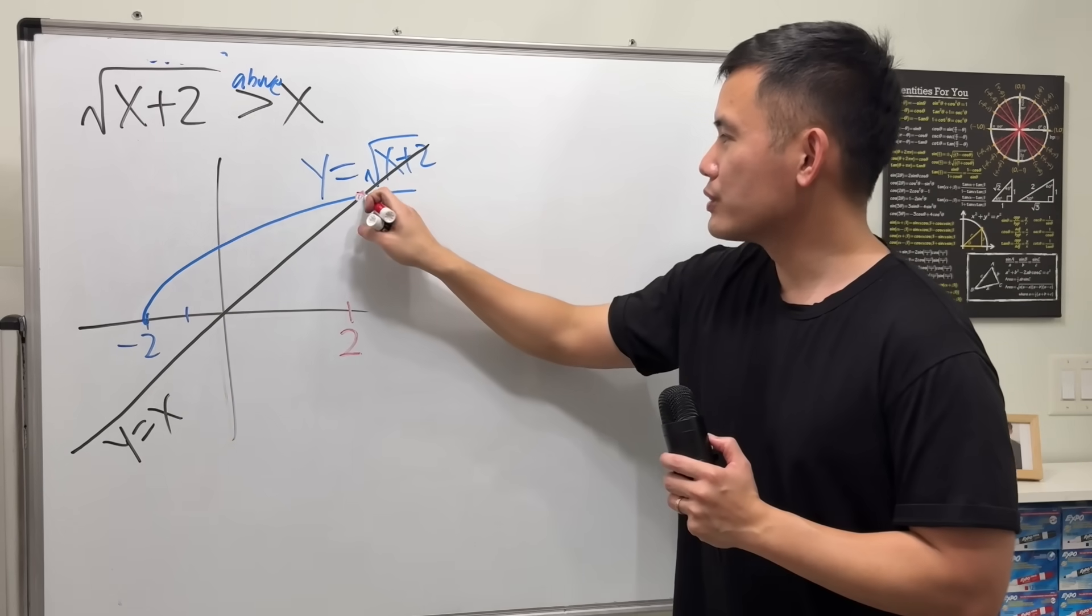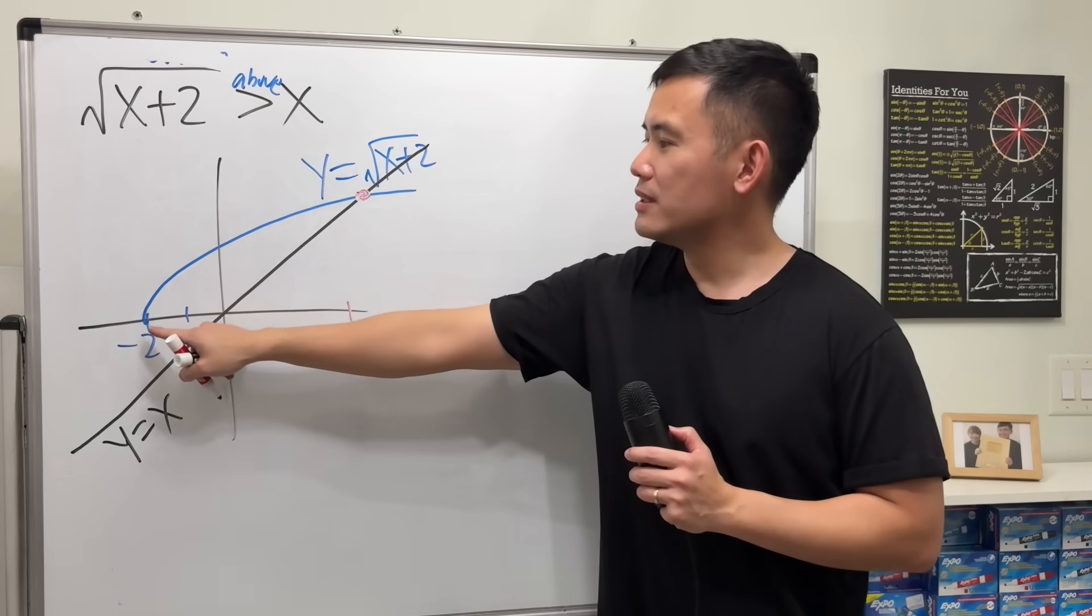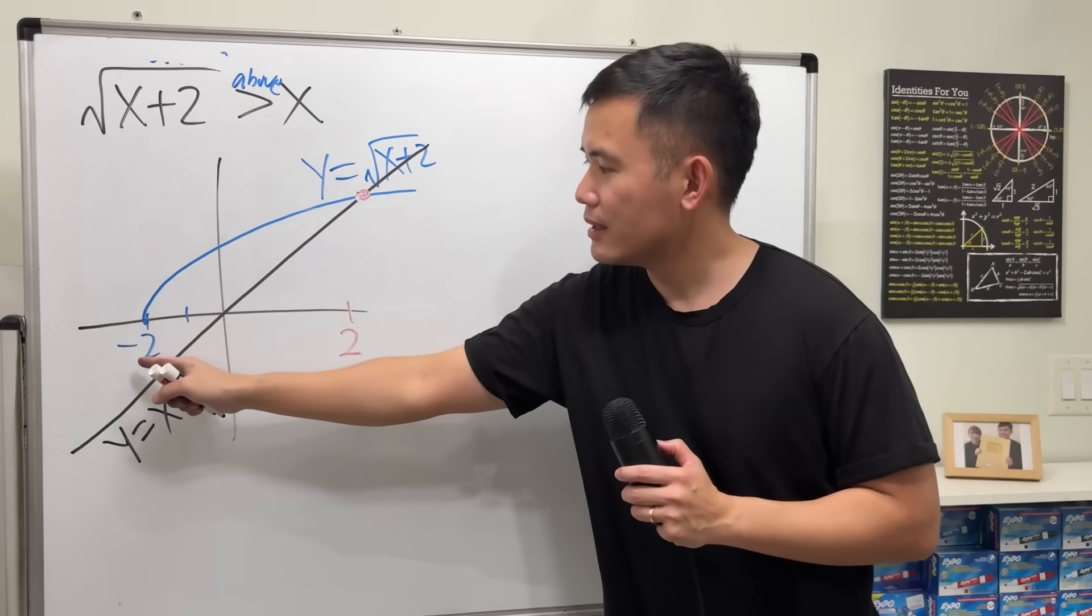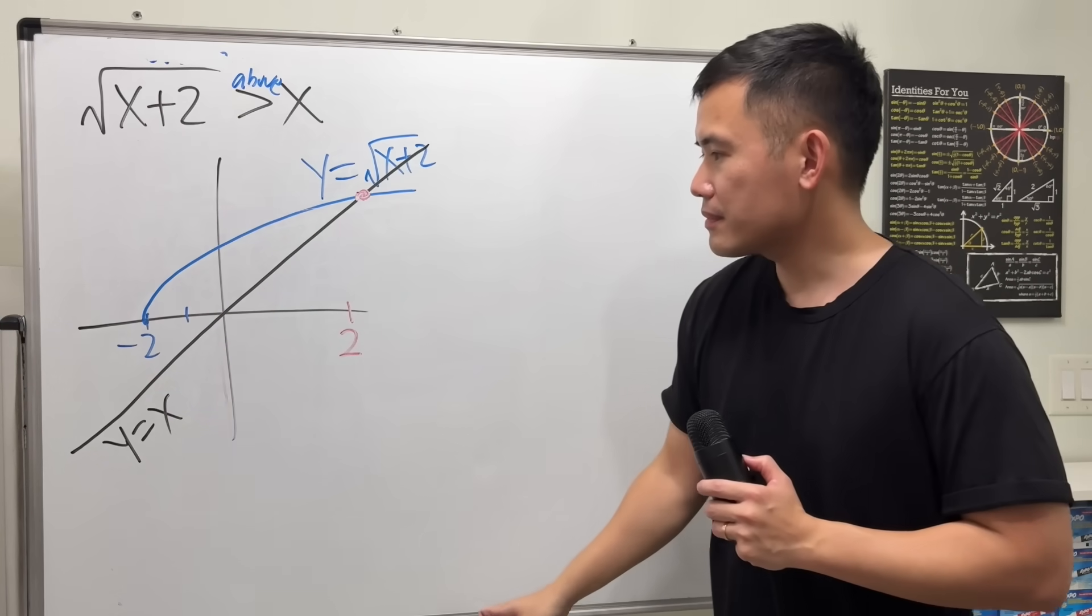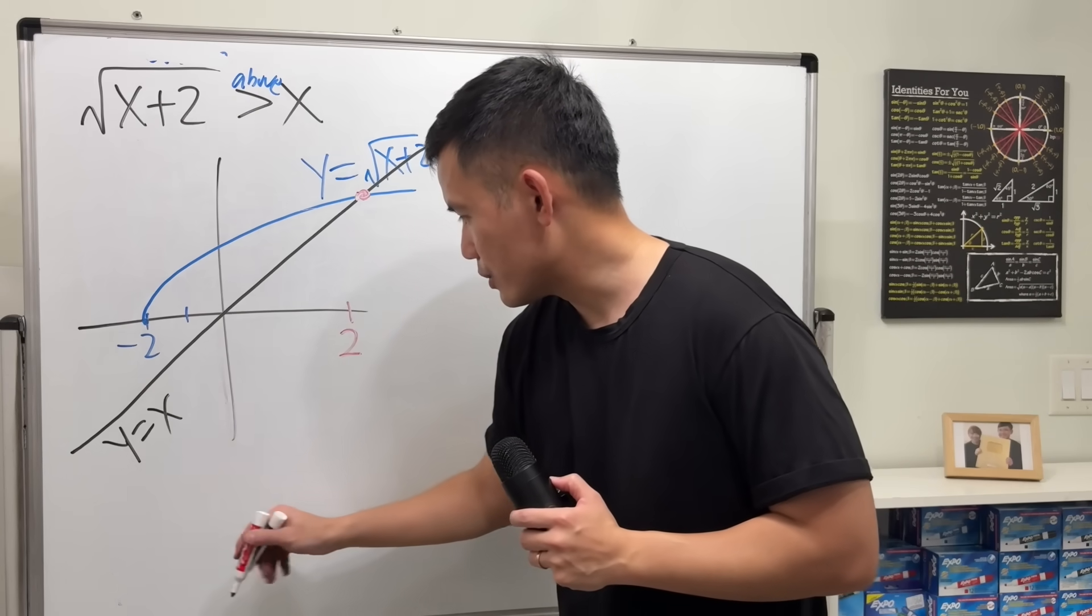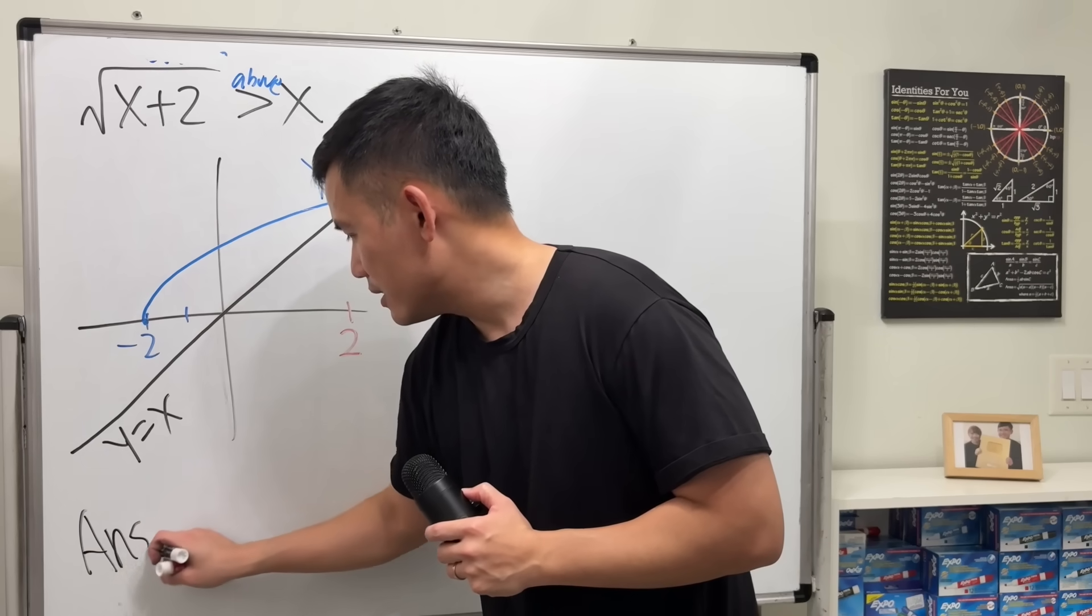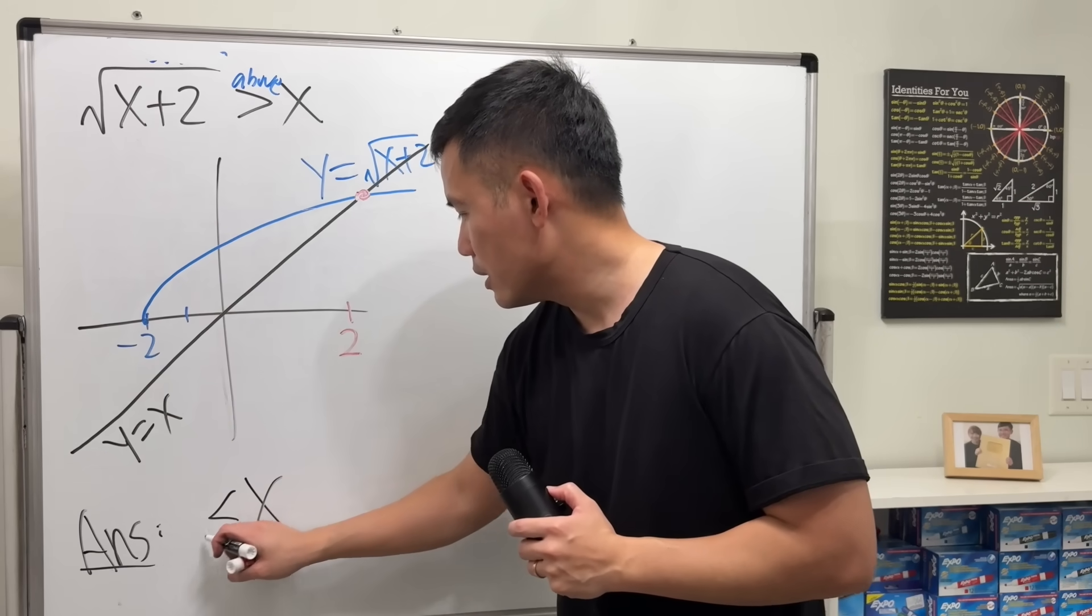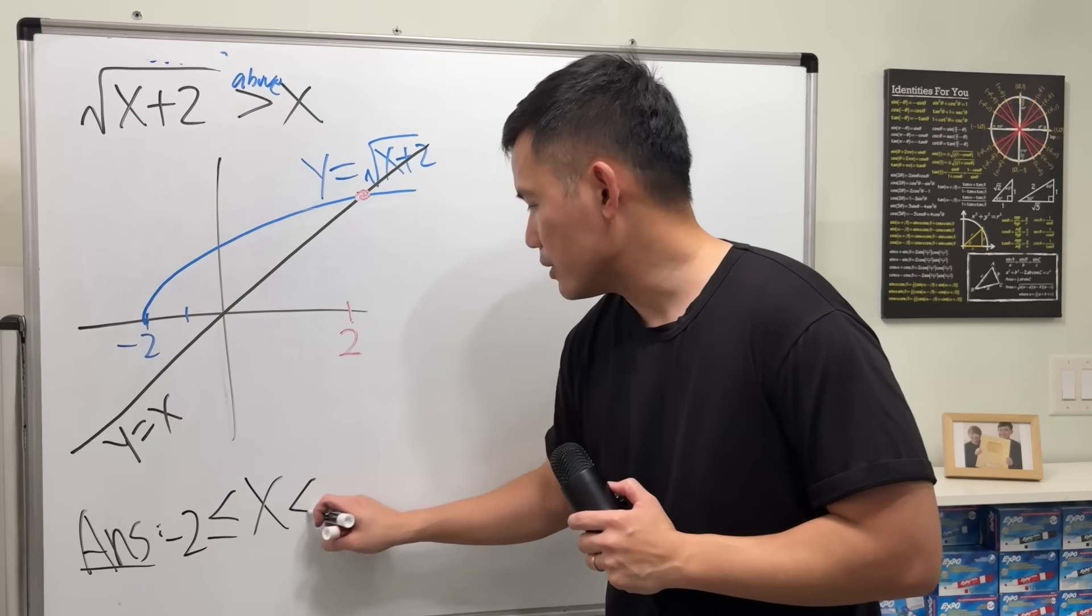So, to answer this question for you guys, when is this above than that? This, this, and that. So we go from negative 2 to 2. That's the answer I will just write down. Now, the answer is when x is in between negative 2 and 2.